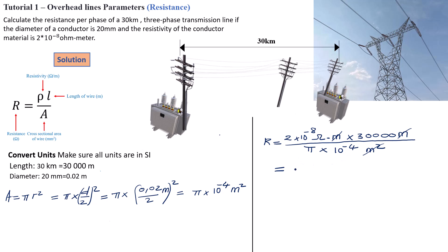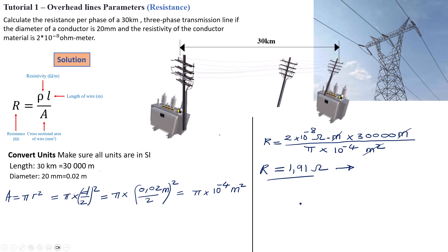Computing 2 times 10 to the power negative 8 times 30,000, divided by pi times 10 to the power negative 4, gives a value of 1.91 ohms. That's basically your final resistance for this problem. Now, 1.91 ohms is quite a significant resistance if you're transmitting around 2 kilo-amps of current, but remember this resistance is not over 10 meters — this is over 30 kilometers of transmission line. The amount of power you transmit over this distance versus how much you dissipate can actually justify these power losses.